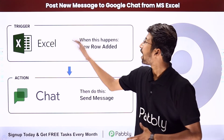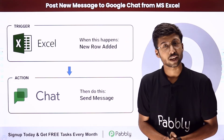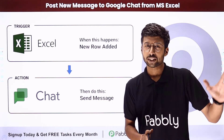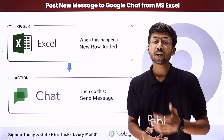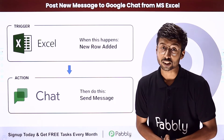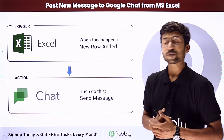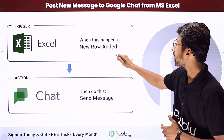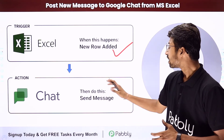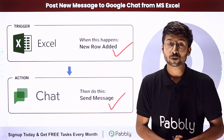In this video we will learn how to post a new message to Google Chat from Microsoft Excel. Suppose you are adding some data in Microsoft Excel and you want that data to be shared automatically on your Google Chat space with your team members as a message. You can completely automate this process — the trigger will be the addition of a new row in Microsoft Excel, and the action will be sending a message on Google Chat.